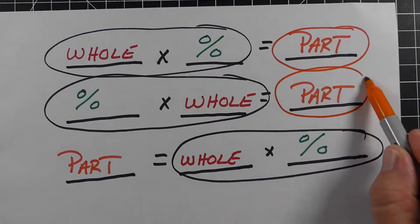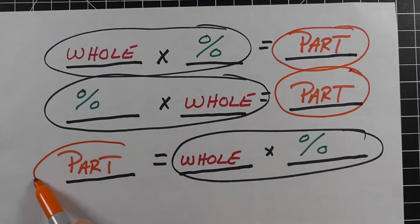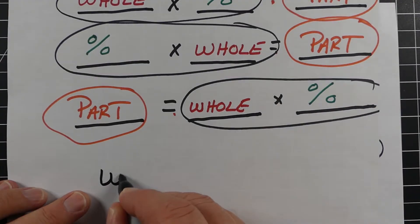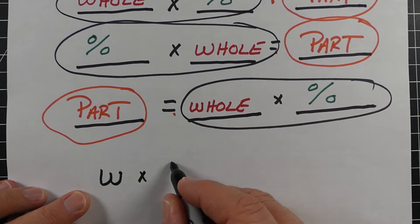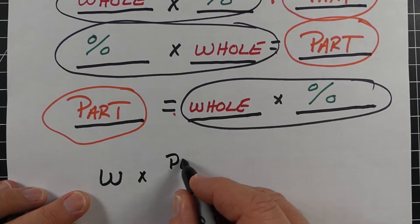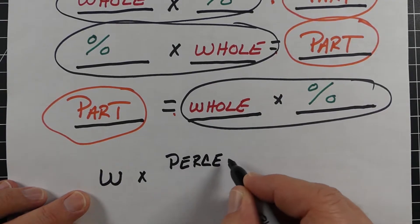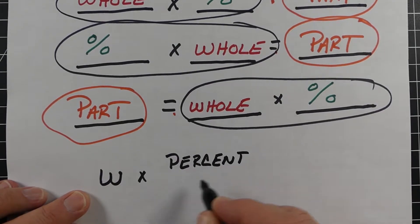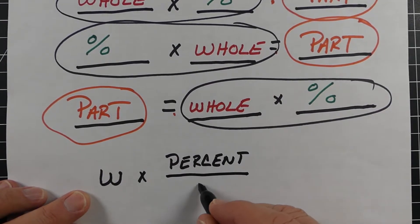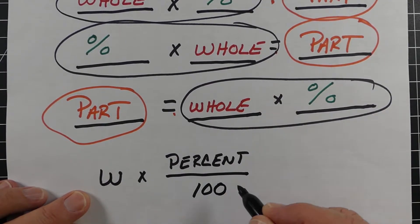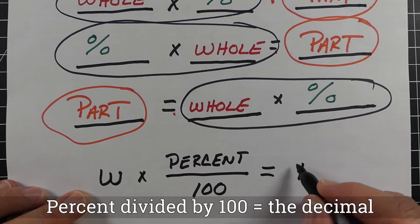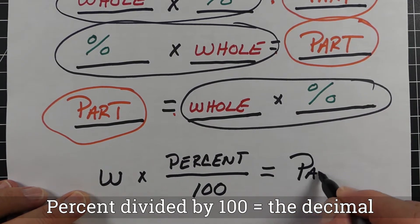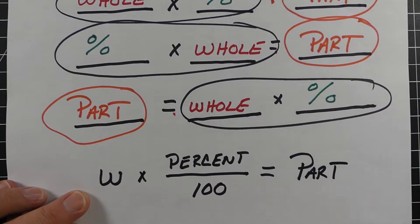Sometimes you'll also see a formula like this: the whole amount times the percent divided by 100 equals the part. It's the same thing as just writing the percent as a decimal.